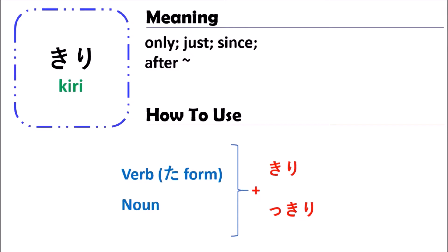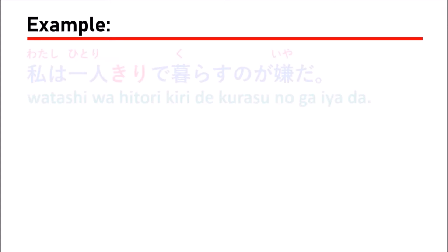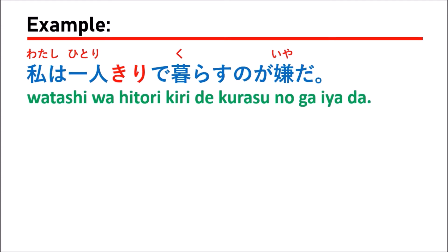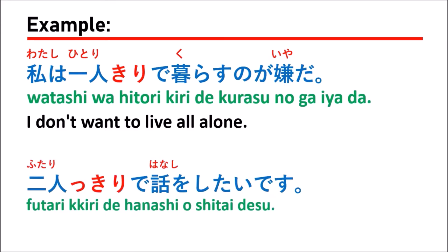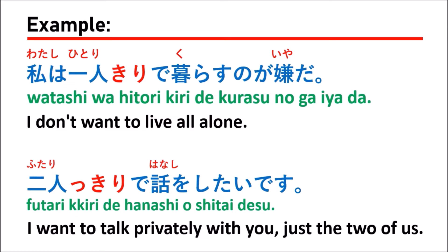Now let's look at some examples to better understand how to use the grammar of kiri. The first example: 私は一人きりで暮らすのが嫌だ, which means 'I don't want to live all alone.' In this sentence, we use hitori, which is a noun. So when you use a noun with kiri, you attach kiri directly: hitori + kiri = hitorikiri.